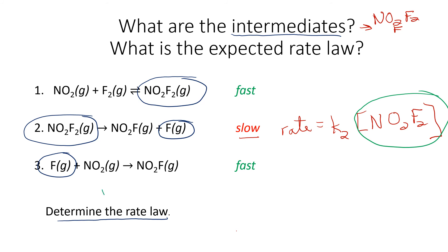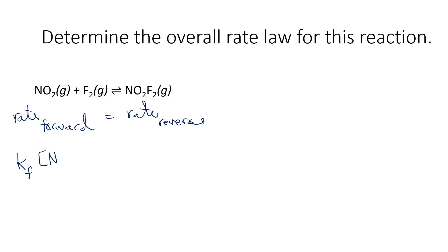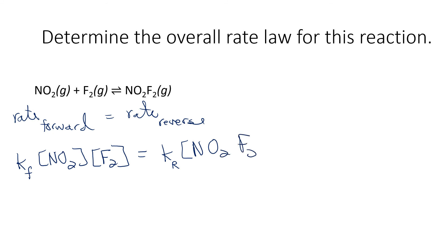Notice that we have equilibrium again in the first reaction. The rate of the forward reaction equals the rate of the reverse reaction. The forward rate is kf times concentration of NO2 times concentration of F2. The reverse rate is kr times the concentration of NO2F2, which is our intermediate.